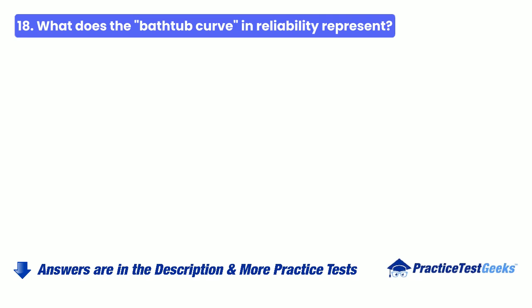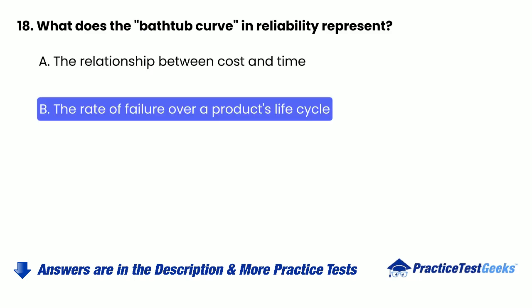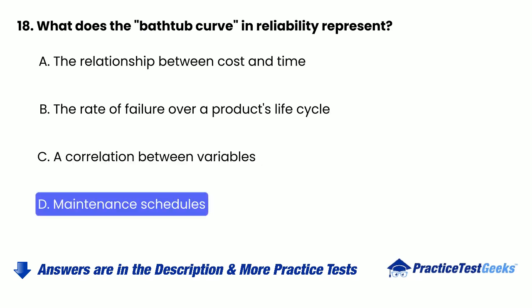18. What does the bathtub curve in reliability represent? a. The relationship between cost and time. b. The rate of failure over a product's life cycle. c. A correlation between variables. d. Maintenance schedules.